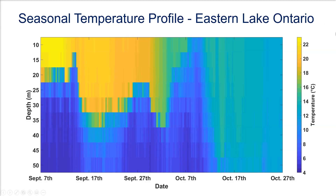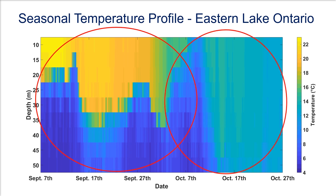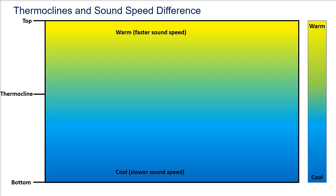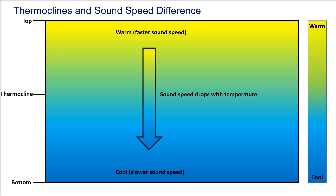In this study, we used data collected between early September and late October 2015 to compare acoustic telemetry detection performance during thermally stratified conditions and isothermal conditions. The key variable to understand when considering the impact of thermoclines on detection performance is the sound speed difference — the difference in the speed of sound between the top and bottom of the lake. The larger the sound speed difference, the more pronounced the sound speed gradient and the more pronounced the effects of sound signal refraction.